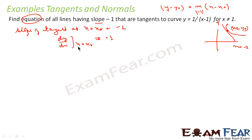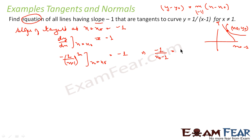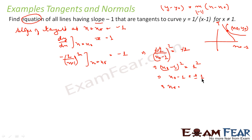So let us find dy/dx at x = x₀. My equation is y = 1/(x - 1), so dy/dx = -1/(x - 1)². Putting x = x₀: -1/(x₀ - 1)² = -1. The negatives cancel, giving (x₀ - 1)² = 1. So x₀ - 1 = ±1, meaning x₀ = 2 or x₀ = 0.